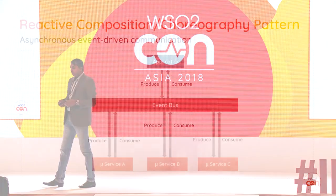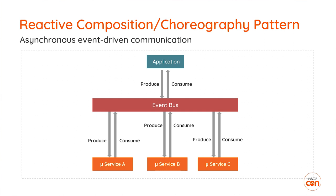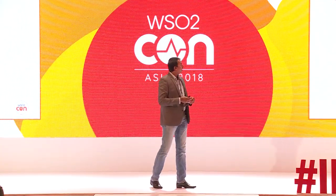The second pattern is reactive composition, or the choreography pattern. Here we have a central event bus with multiple microservices communicating through it. This architecture considers the asynchronous aspect of communication — when a particular action or data appears on a microservice, it pushes that data to the event bus, and other applications receive that information. This architecture is good if you are implementing asynchronous or event-driven communication.